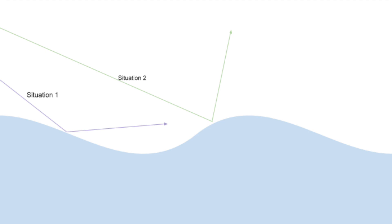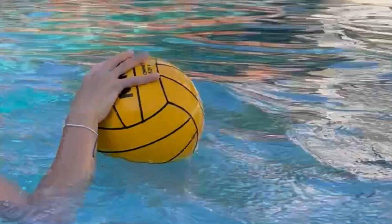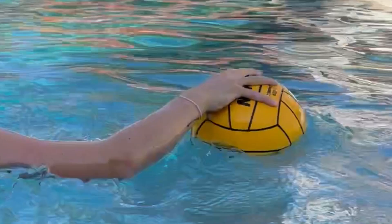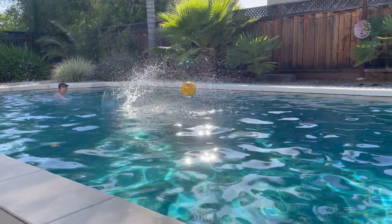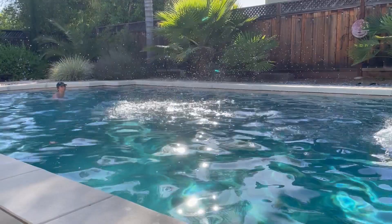As you can see, in situation 1, the ball hits a decline, causing it to bounce off at a lower angle than if it had hit on an incline, like situation 2. When the ball hits the water, it creates a sort of depression in the surface of the water. Because of this, the ball can lose its spin and momentum, causing it to slow down or even stop completely.